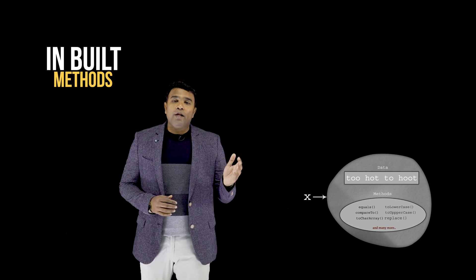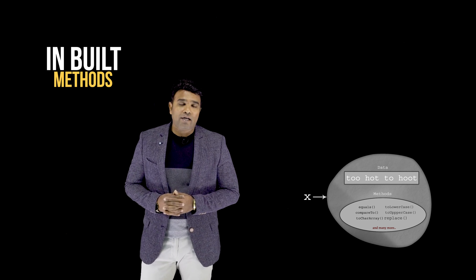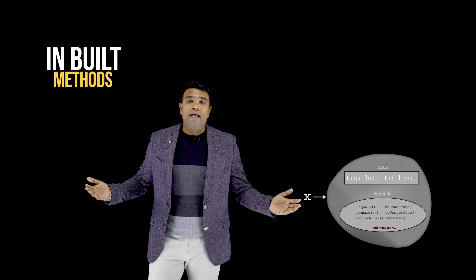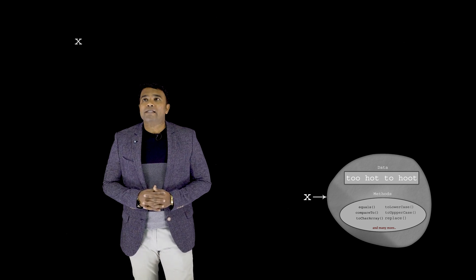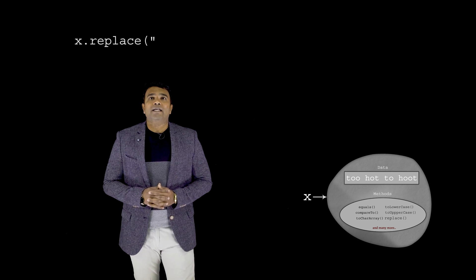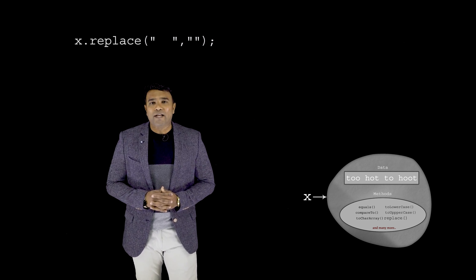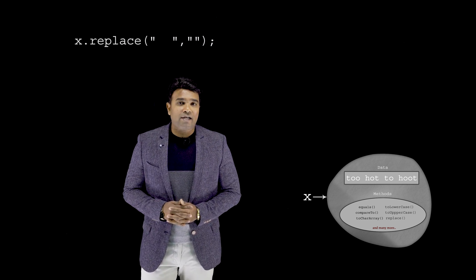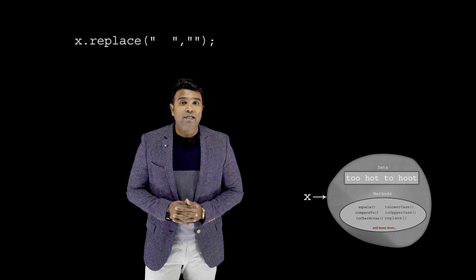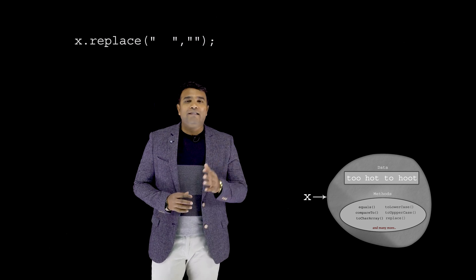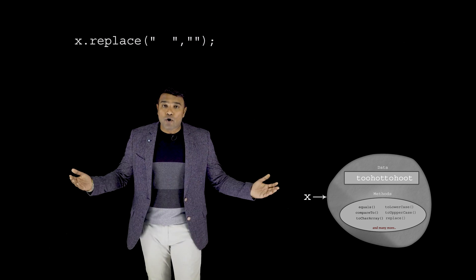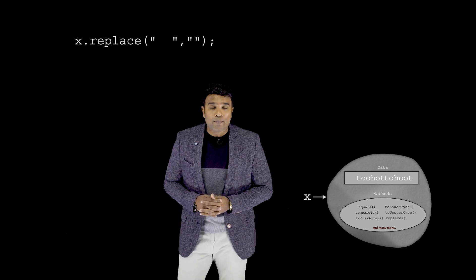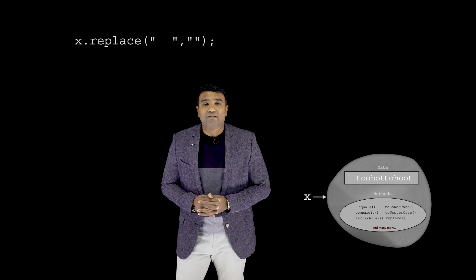And in order to invoke any inbuilt method, I have to make use of the reference X. So, all that I have to say is, x.replace the blank with an empty string. That is all that I have to do. And provided I execute that one statement, the change that happens internally in the object is this. So, as you can see, I have been successful in replacing the blank with empty string.